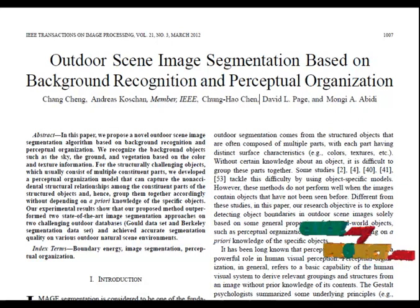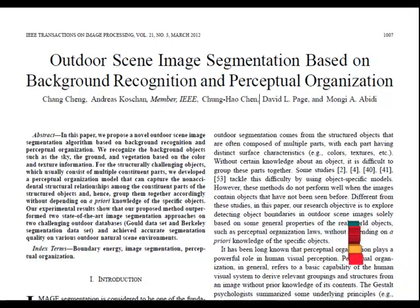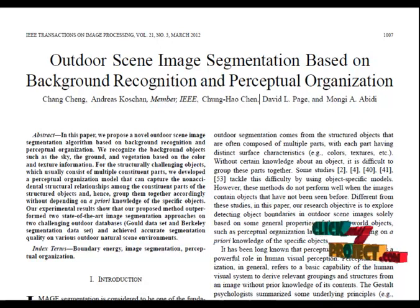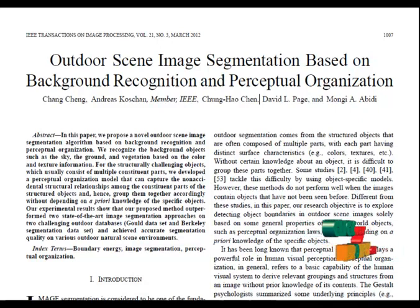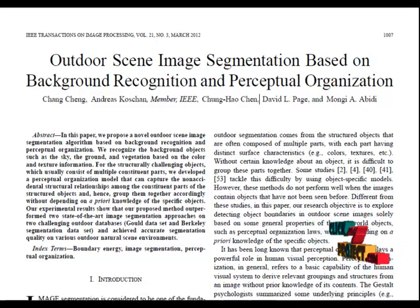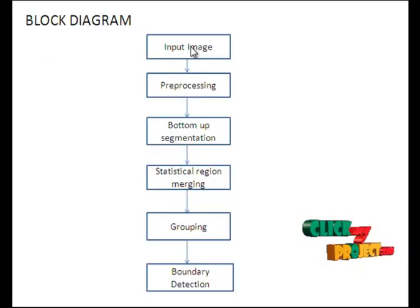Our image segmentation algorithm can be divided into three steps. First, given an image, use the bottom-up method to segment it into uniform patches. Second, use the background classifier to identify the background patches. Third, a perceptual organization method is used to group the remaining patches into larger regions corresponding to the structured objects.